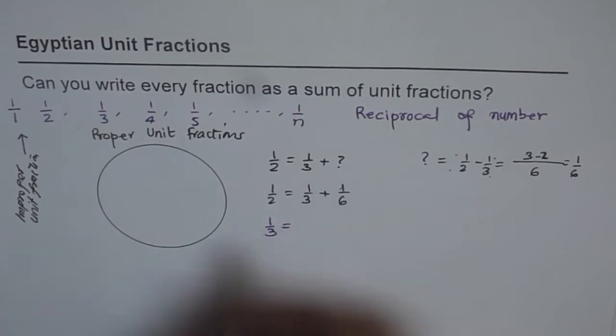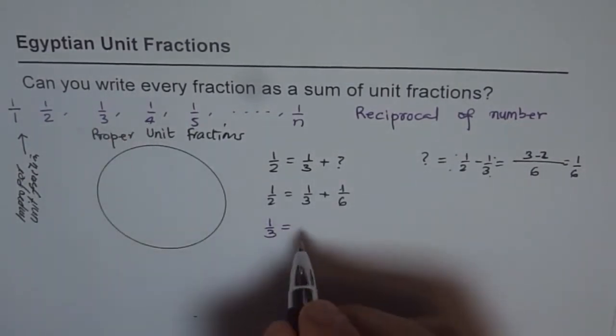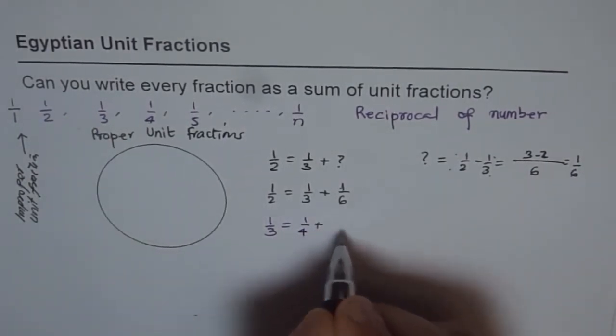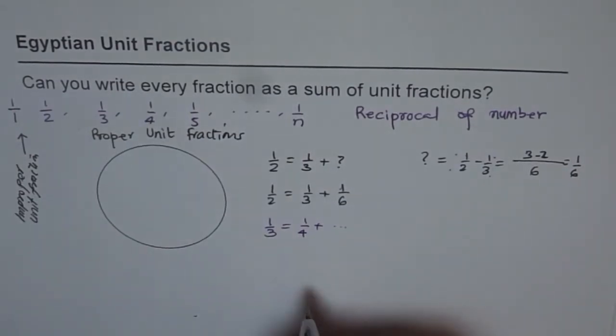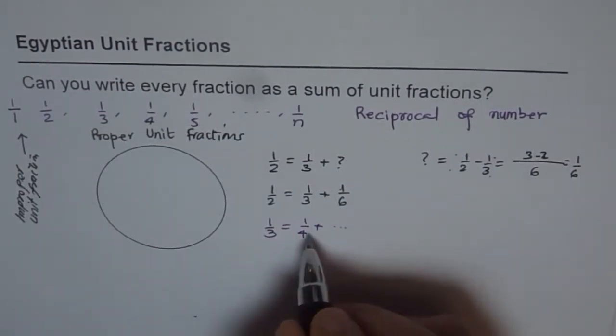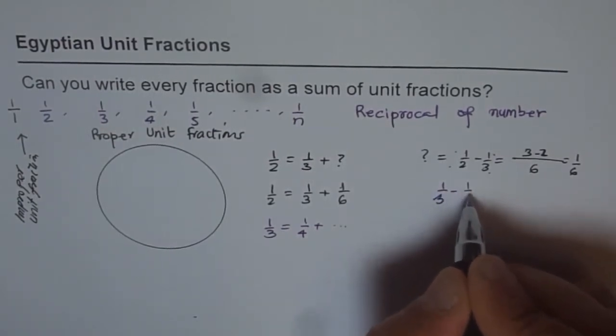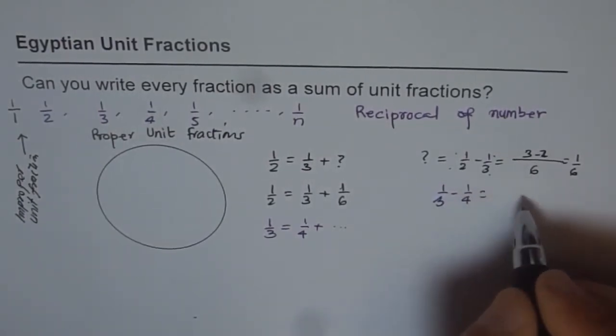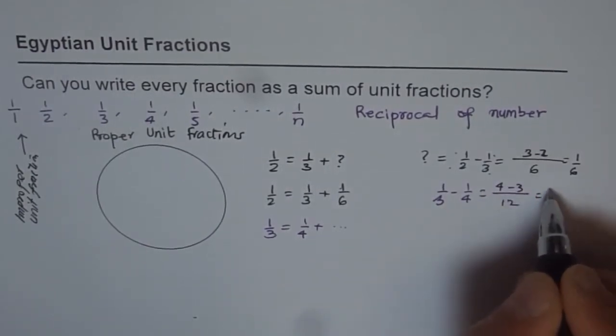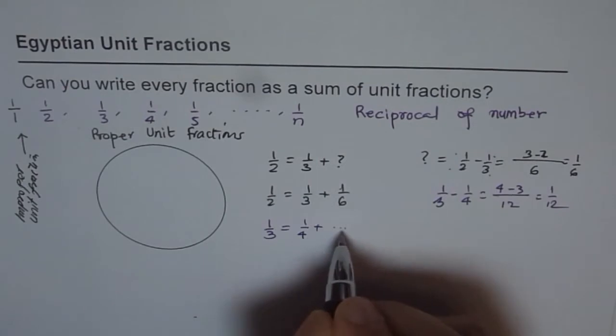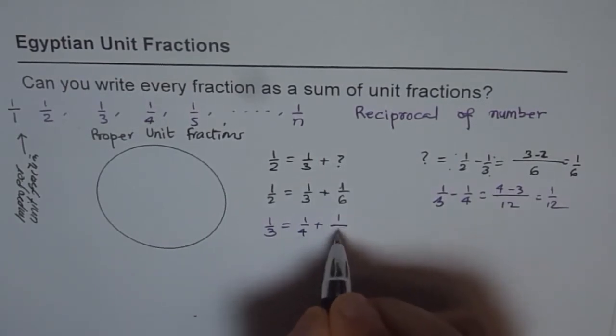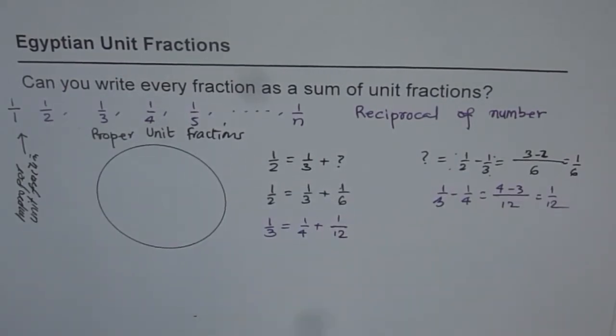So one third could be written as next lower is one fourth. One fourth plus something. What that something should be? We can figure it out. One third minus one fourth, same policy. So we get one third minus one fourth. Common denominator is 12. And we get four minus three, which is one over 12. And so we get here, this combination should be one over 12. So we get our answer. Very good.